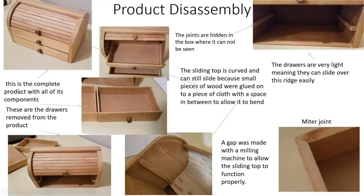This is the complete product with all of its components, and here are the drawers removed. If we look at this picture, you can see a groove — this groove or cap was made using a milling machine to allow the sliding top to function properly. In this picture we have a clear image of a mitre joint.